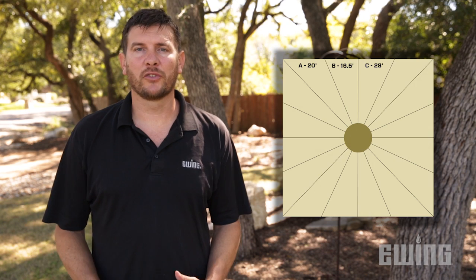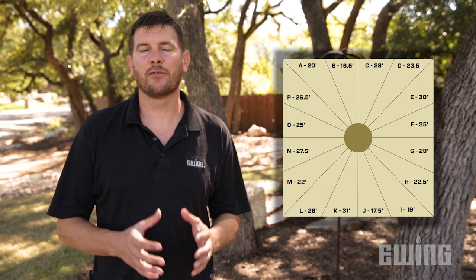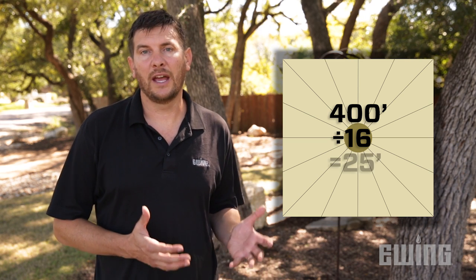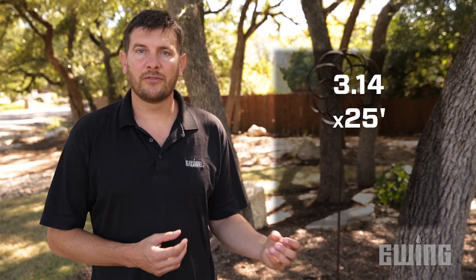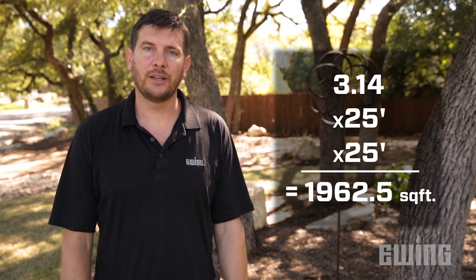Now that you have your measurements, take the 16 points and add them up, then divide by 16 to get the average radius. In our example, the average radius is 25 feet. Now we'll put it into the formula to calculate the area of a circle, which is pi times the radius squared. So for our example, we take pi — 3.14 — times 25 times 25, and that gives us the area of our irregular shape.